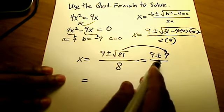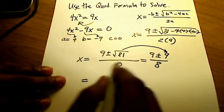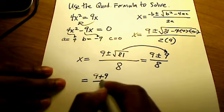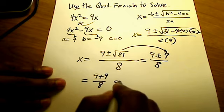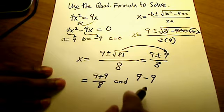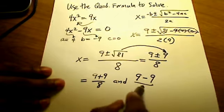Do you see that there are two things going on in this problem? There's, up top in the numerator, there's 9 plus 9 divided by 8, and there's 9 minus 9, all over 8.